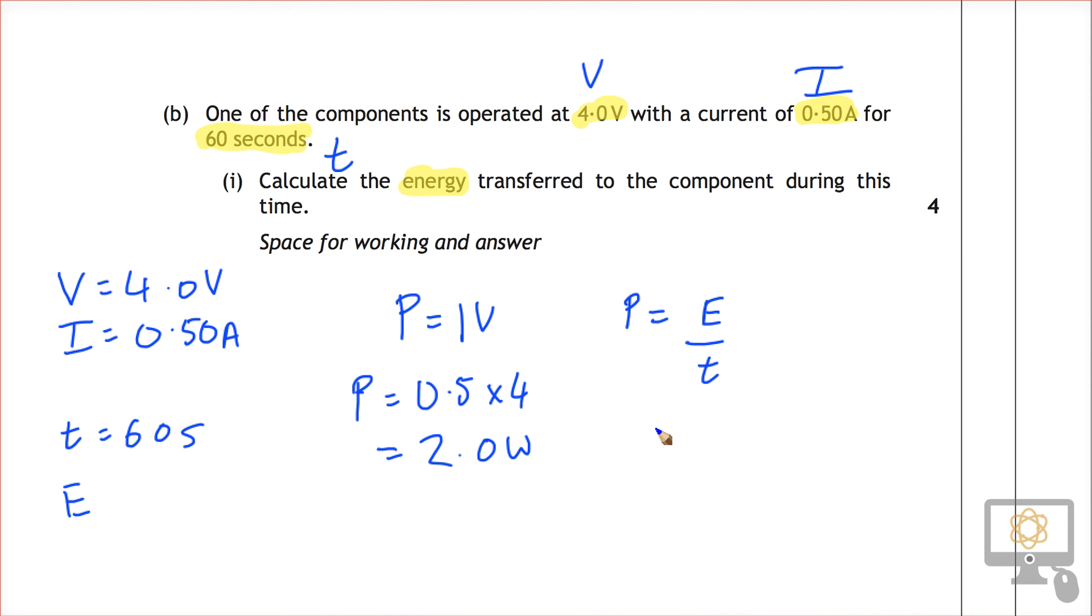And then we can plug that into the equation over here. 2.0 is equal to the energy over the 60 seconds. And so the energy is going to be 2 times 60. So our final answer is that the energy is equal to 120 joules. And let's check 2 sig fig all the way and the answer is given to 2 sig fig.